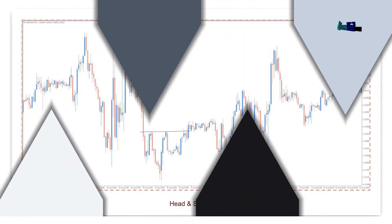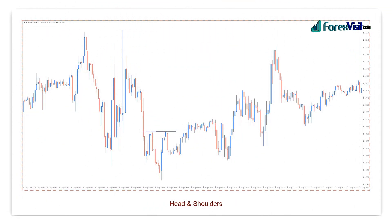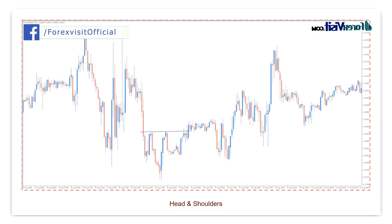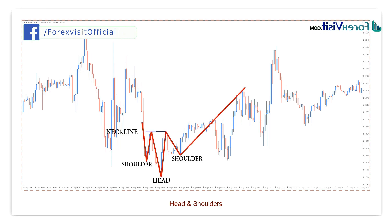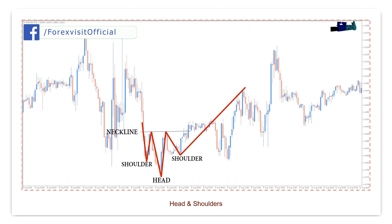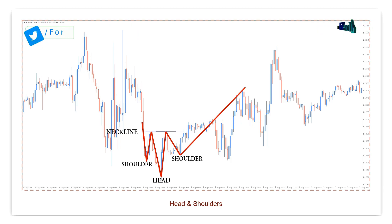Here is how we see the head and shoulders in a bearish market. We see one drop down followed by a left shoulder, head, and right shoulder. Again, once the neckline breaks, it should move 80% of the distance from the neckline to the low point of the head.